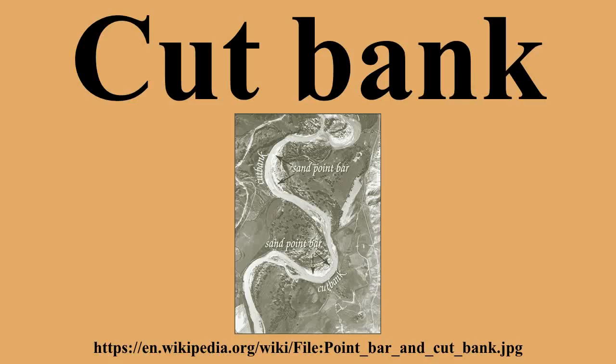A cut bank, also known as a river cliff, is the outside bank of the water channel which is continually undergoing erosion. Cut banks are found in abundance along mature meandering streams. They are located on the outside of a stream bend, known as a meander, opposite the slip-off slope on the inside of the bend. They are shaped much like a small cliff, and are formed by the erosion of soil as the stream collides with the river bank, as opposed to a point bar which is an area of deposition. A cut bank is an area of erosion.